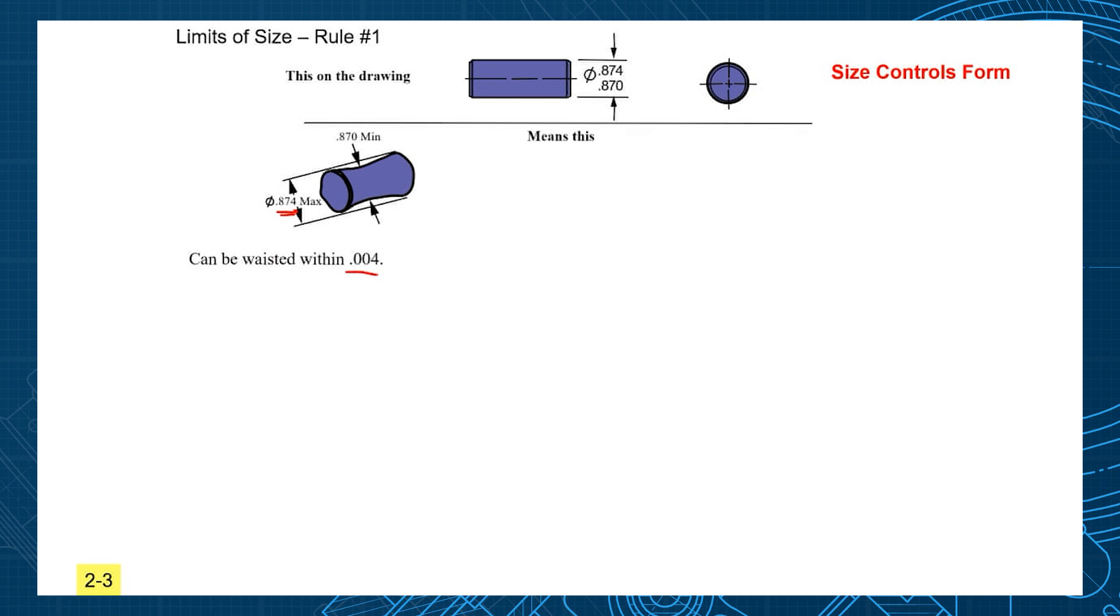How tapered could the shaft be? Well, no more than four-thousandths, because it must fit inside of an .874 hole, but its cross-section could go .870 and .874 on one end.